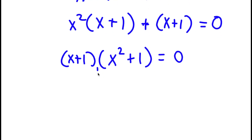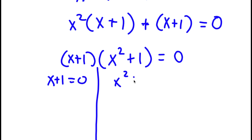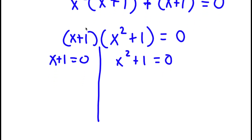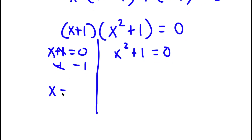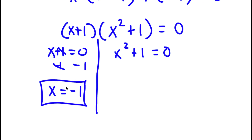From here I get two equations: x + 1 = 0, and x² + 1 = 0. For x + 1 = 0, I simply subtract 1 on both sides — these two cancel out, and I'm left with x = -1. So this is one solution of x.